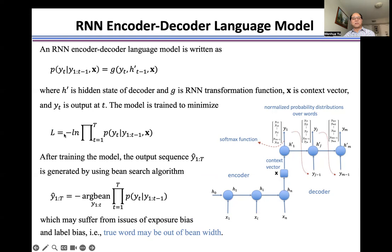And then we use this error as a loss function to train the model to find the normalized probability distributions over words at each time. After we train the model, the output sequence is generated by using the beam-search algorithm. The sequence generated in this way may suffer from the issues of exposure bias and label bias, namely the true word may be out of the beam width.